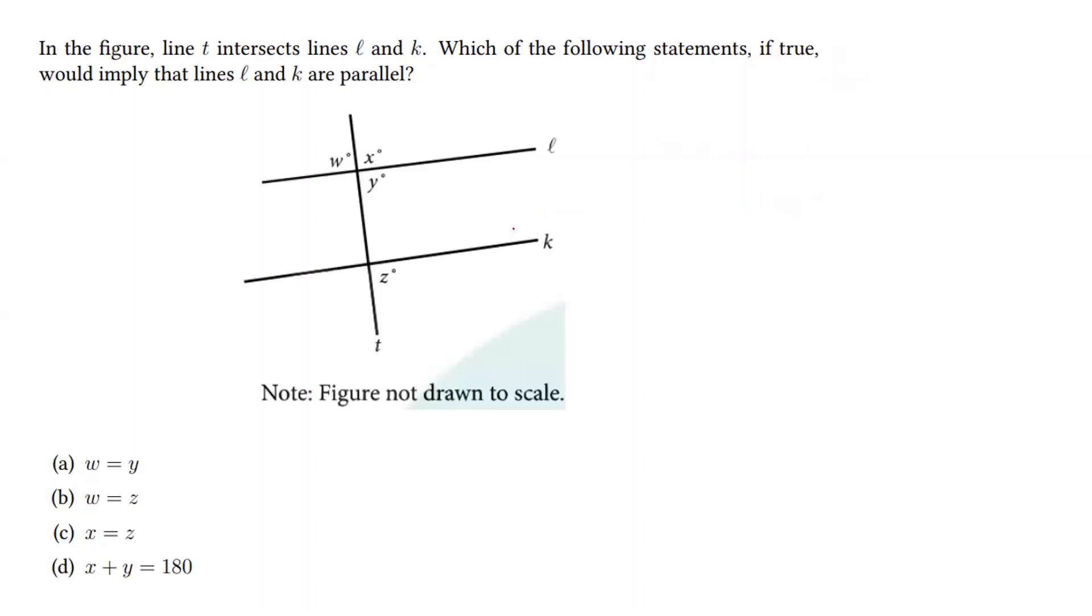We have a figure, and we want to show that lines l and k are parallel. In order for them to be parallel, all of the opposite angles need to be the same. That is, this angle would need to be the same down here. Thus, since w degrees and z degrees are opposite angles, w would need to be equal to z in order for these lines to be parallel.